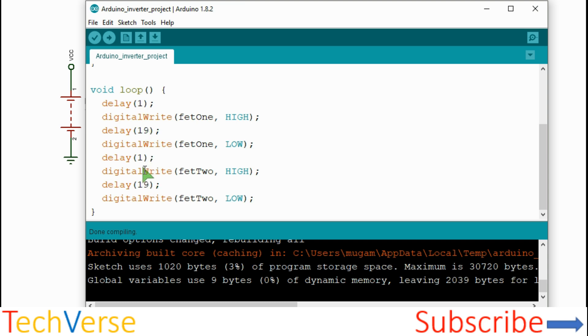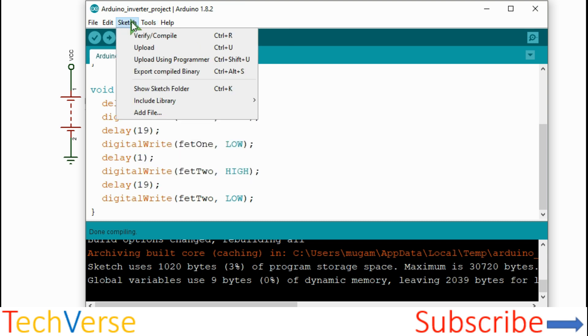So then you need to export the binary as a compiled binary so that Proteus can read the code and upload to the virtual Arduino.